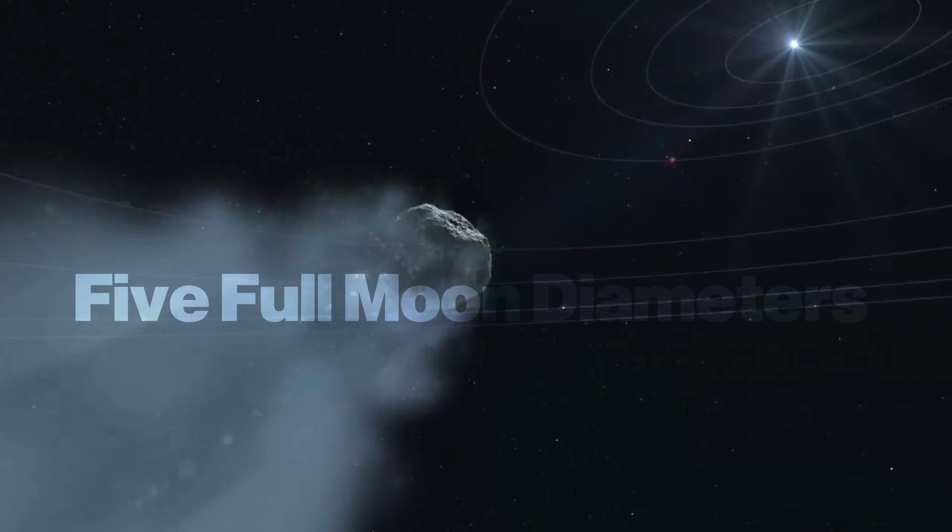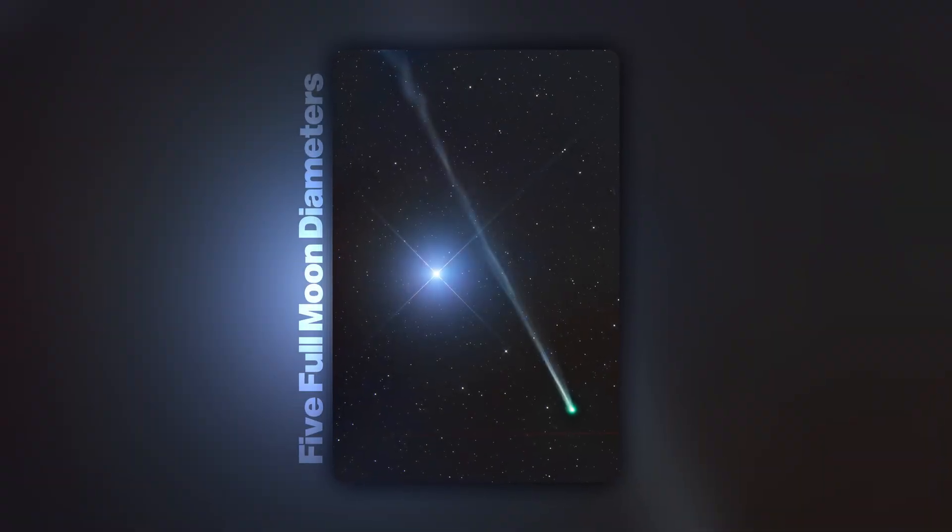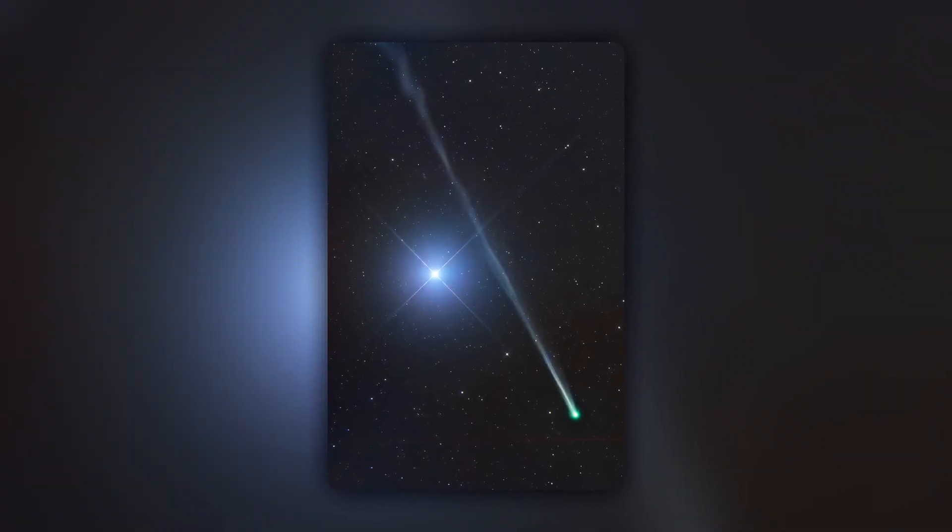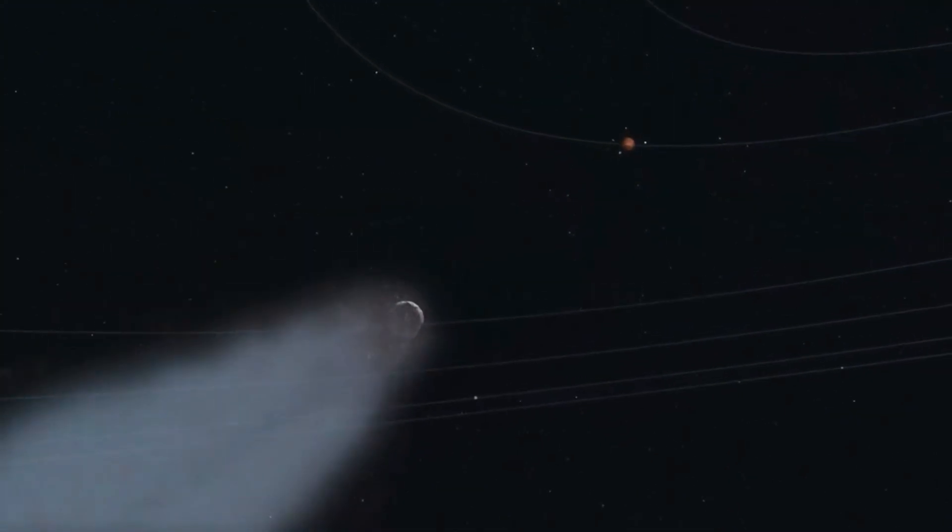The second visitor, Comet Swan, just emerged from the sun's glare with a tail stretching five full moon diameters across our sky, following an extremely long orbital period that brings it back to our solar system only once every several thousand years.